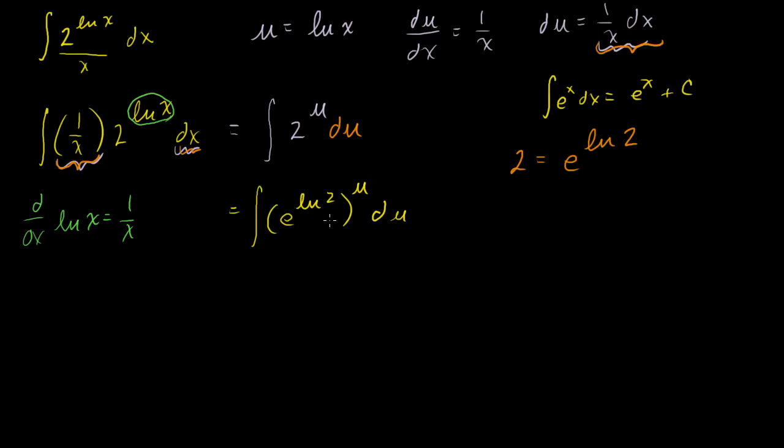So this will be equal to, instead of writing the number 2, I could write e to the natural log of 2. And all of that to the u, du. And now what is this equal to? Well, if I take something to an exponent and then to another exponent, this is the same thing as taking my base to the product of those exponents. So this is equal to the integral of e to the natural log of 2 times u du.